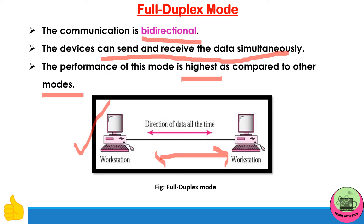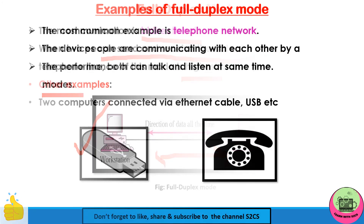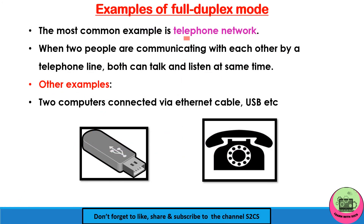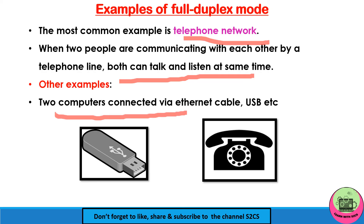The most common example of full-duplex is the telephone network — mobile phones and all. When two people are communicating with each other on a telephone line, both can talk and listen at the same time. Other examples include two computers connected via Ethernet cable, and USB. These are the examples of full-duplex mode.